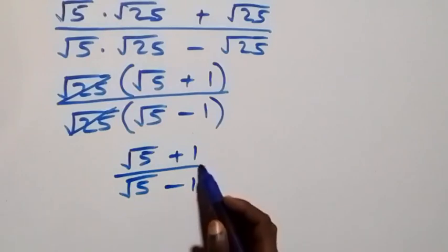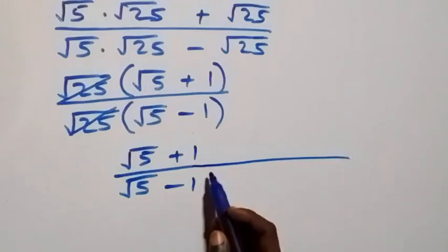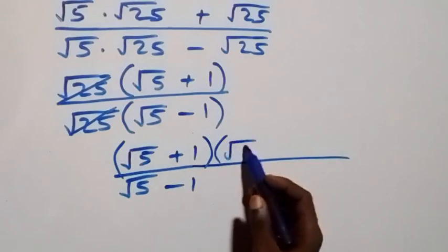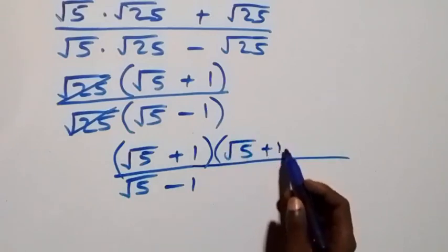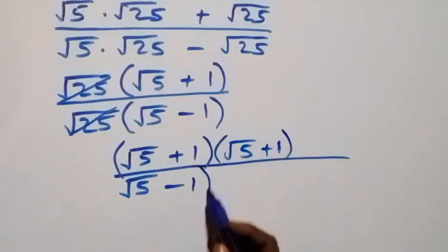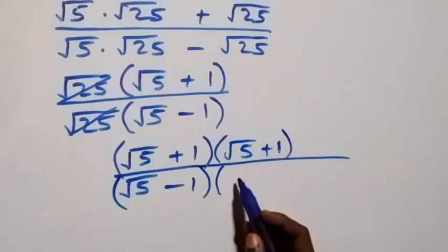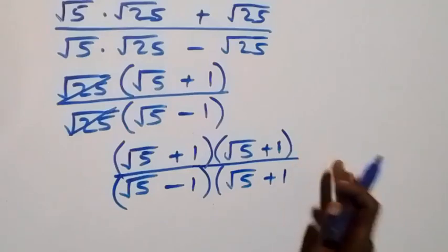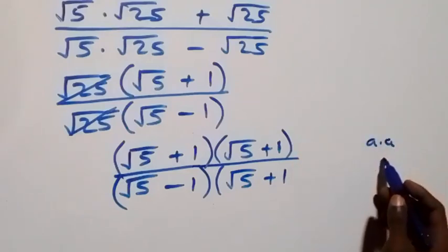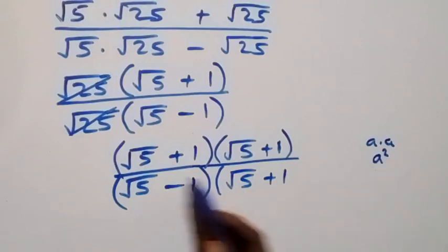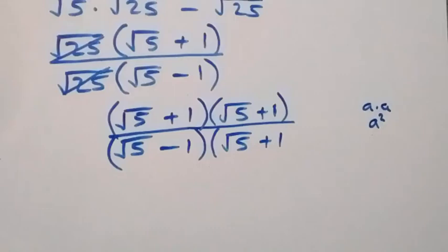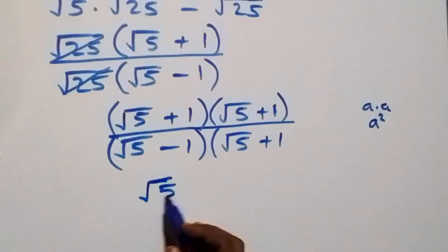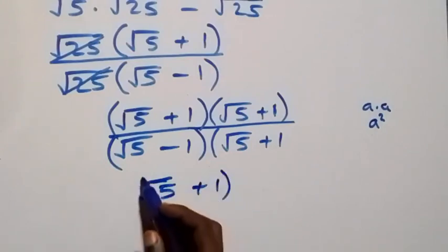We multiply by the conjugate of the denominator. We multiply both numerator and denominator by root 5 plus 1, which is the conjugate of the denominator. When the same thing is multiplied by itself it becomes squared, so the numerator becomes (root 5 plus 1) squared.